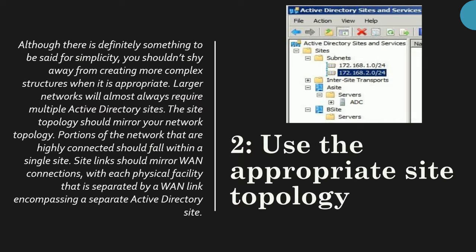Tip two: use appropriate size topology. Although there is definitely something to be said for simplicity, you shouldn't shy away from creating a more complex structure when it is appropriate. A large network will almost always require multiple Active Directory sites. The site topology should mirror your network topology. Portions of the network that are highly connected should fall within a single site. Site links should mirror WAN connections, with each physical facility separated by a WAN link encompassing a separate Active Directory site.